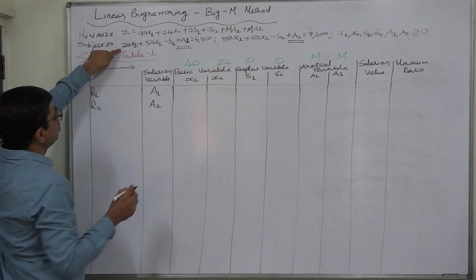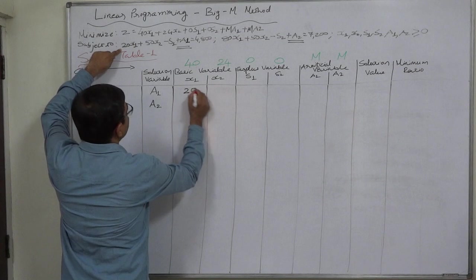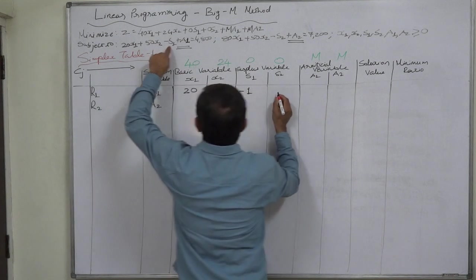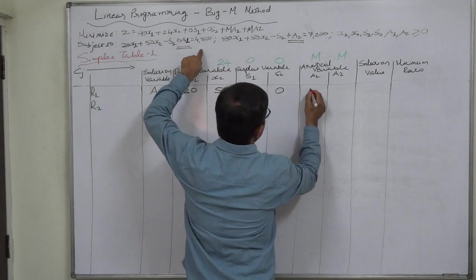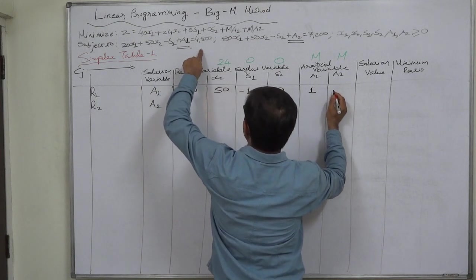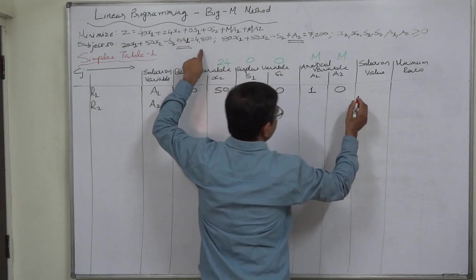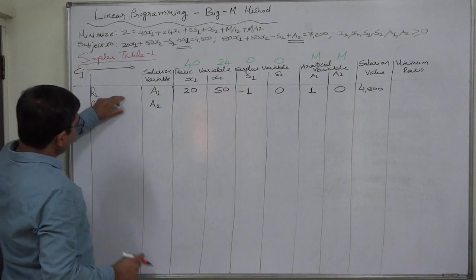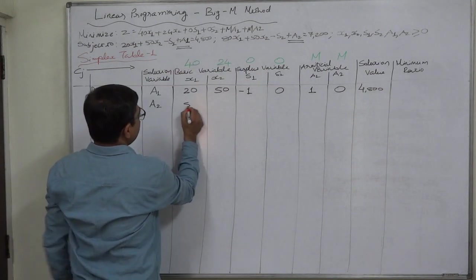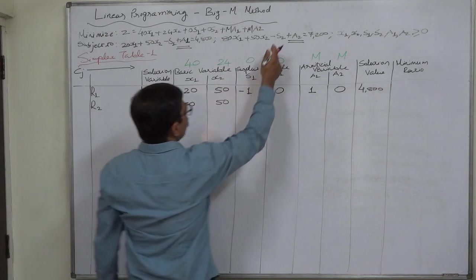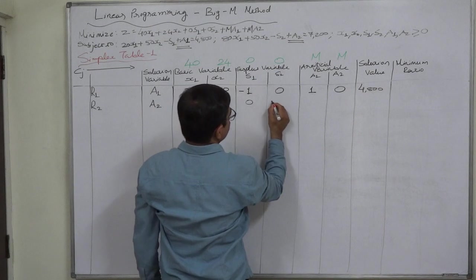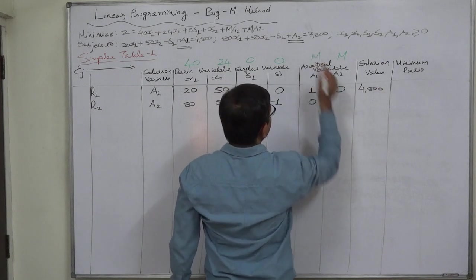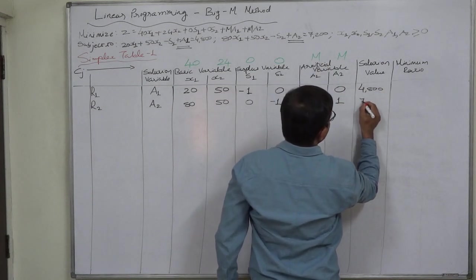Now we write the coefficients from both constraints. The first constraint gives the first row: 20 for x1, 50 for x2, −1 for s1, 0 for s2, +1 for a1, 0 for a2, and solution value 4800. The second row comes from the second constraint: 80 for x1, 50 for x2, 0 for s1, −1 for s2, 0 for a1, 1 for a2, and solution value 7200.